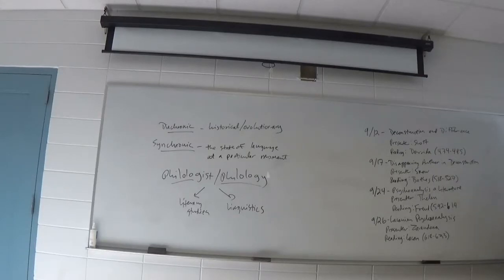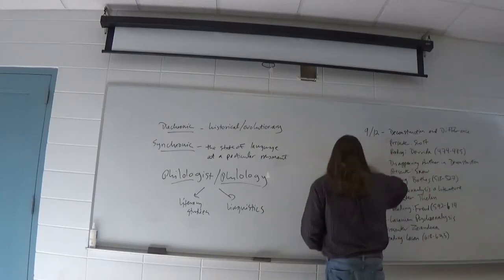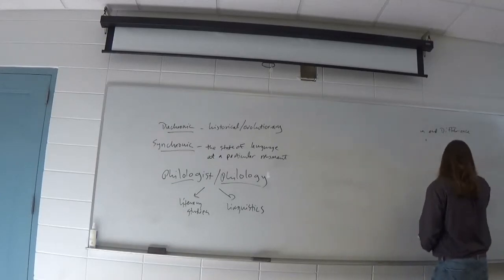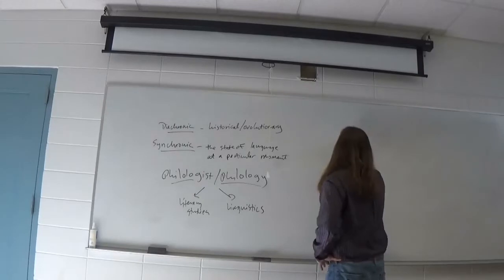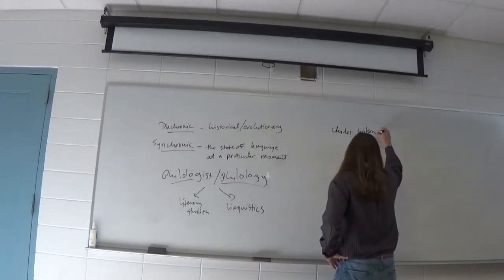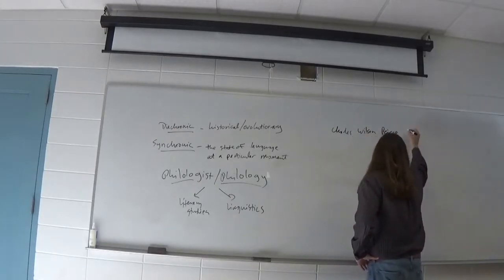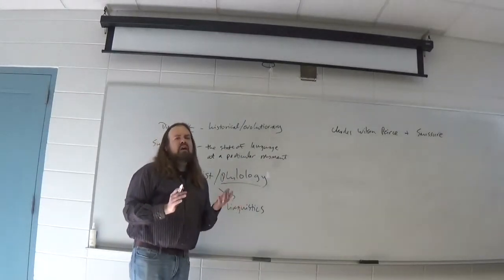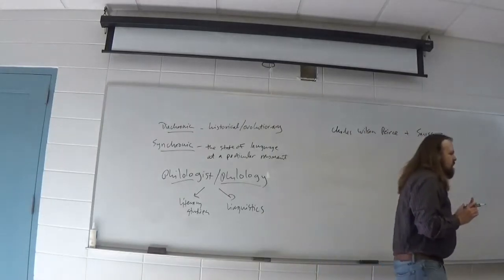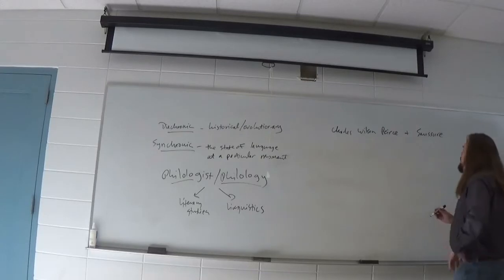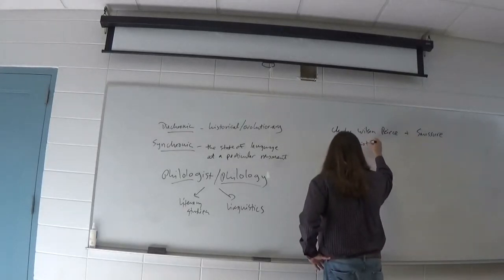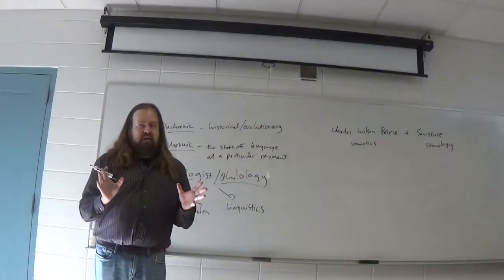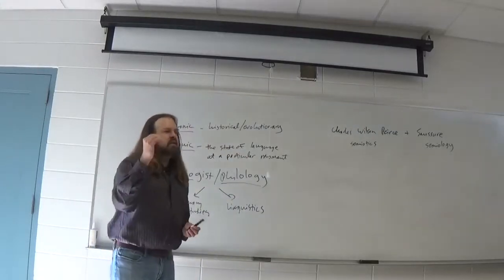Saussure and an American philosopher — actual philosopher, not philologist — by the name of Charles Sanders Peirce, around the same time, independently of each other, are inventing a new kind of system for the study of symbols. Peirce calls it semiotics, and Saussure calls it semiology. We tend to use these two words interchangeably now. Semiotics or semiology simply means the systematic study of signs.